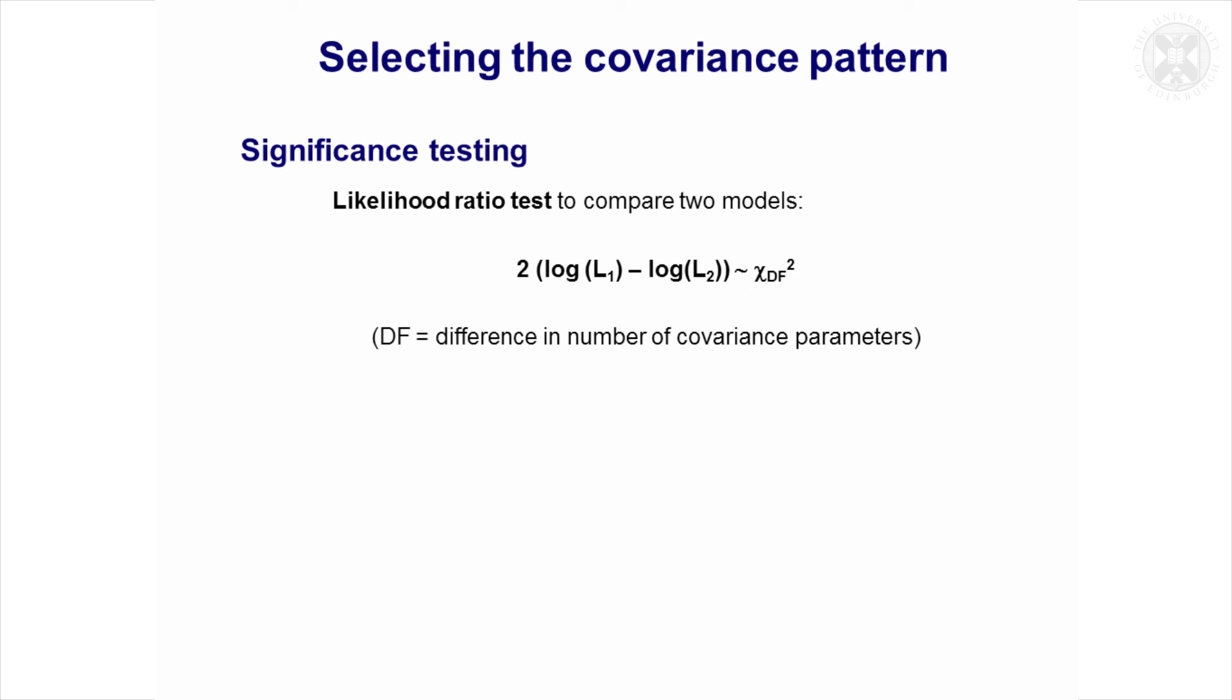You can test that by comparing something called the likelihood, which is a measure of model fit. You can compare that between two alternative models. This is the likelihood ratio test, which compares the likelihood from one model compared to another model, and it'll test whether this first model is a significant improvement over the second model.